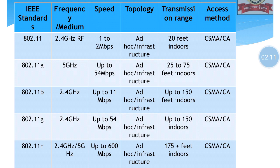Regarding topology, 802.11 is ad hoc in design — ad hoc meaning wireless technology. Regarding range, it increases from 11 to 11N: 802.11 is 20 feet, 11A is 25 to 75 feet, 11B is 150 feet, 11G is the same, and 11N goes up to 175 feet. All use carrier sense multiple access as the access method. You have to remember this factual data, as questions like the difference between 802.11 and 802.11A, or 802.11B and 802.11N, could be asked.